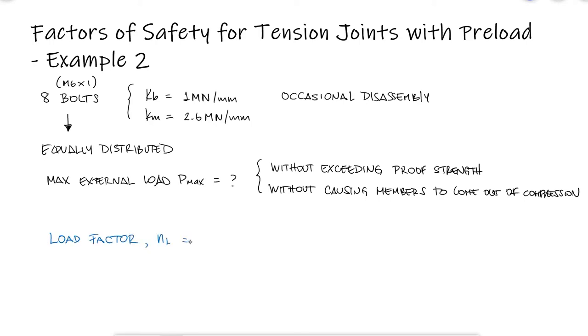We know that the load factor is applied to the external load only, which means that the load factor is guarding the bolt against overloading. Since the preload Fi has already been set to be 75% of the proof load, which is the suggested value for a preload for a non-permanent joint, it makes sense to use the load factor instead of the yielding factor of safety.